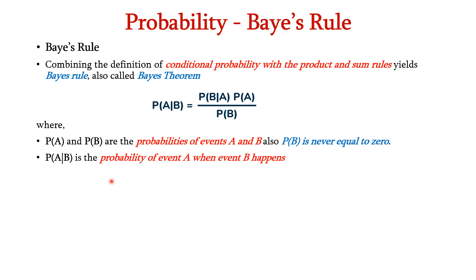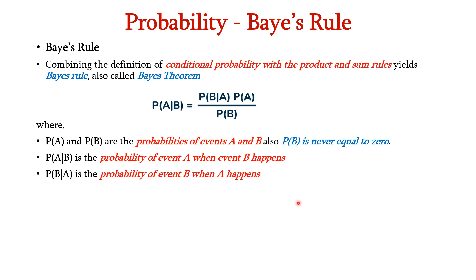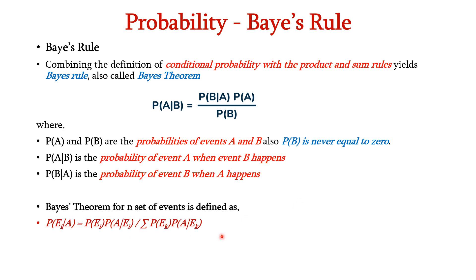P(A given B) is the probability of event A when event B happens. P(B given A) is the probability of event B when A happens. Bayes' theorem for n set of events can be expressed as P(Ei given A) equals P(Ei) times P(A given Ei) divided by the summation of P(Ek) times P(A given Ek).